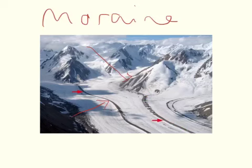Eventually at the snout of the glacier, where a lot of deposition occurs because the glacier has become totally overloaded and can't carry its material, it deposits it creating a large ridge known as a terminal moraine, which you might see if this photo is extended a bit further.